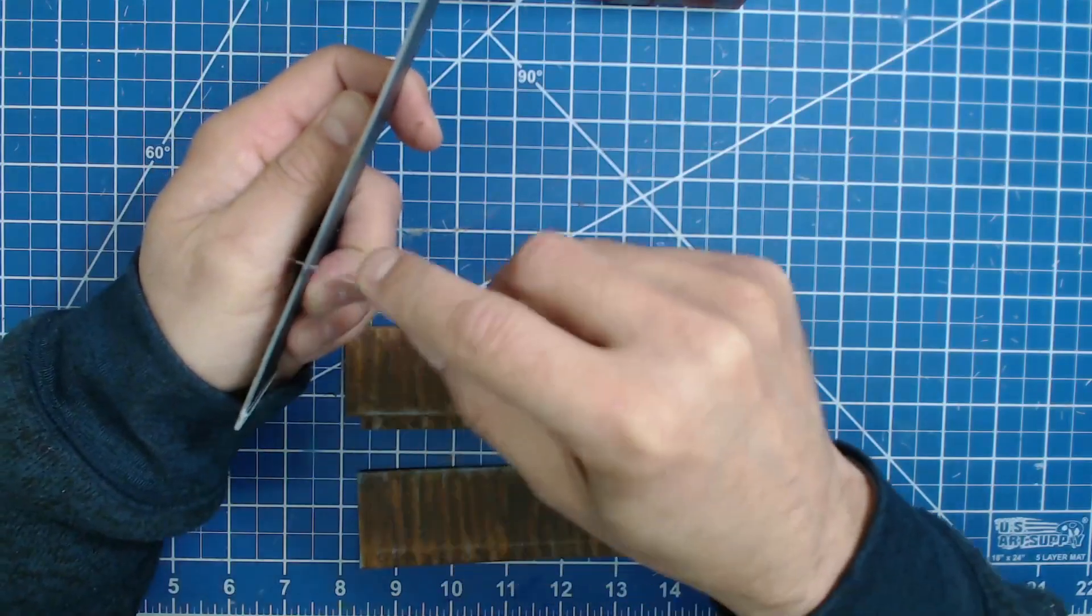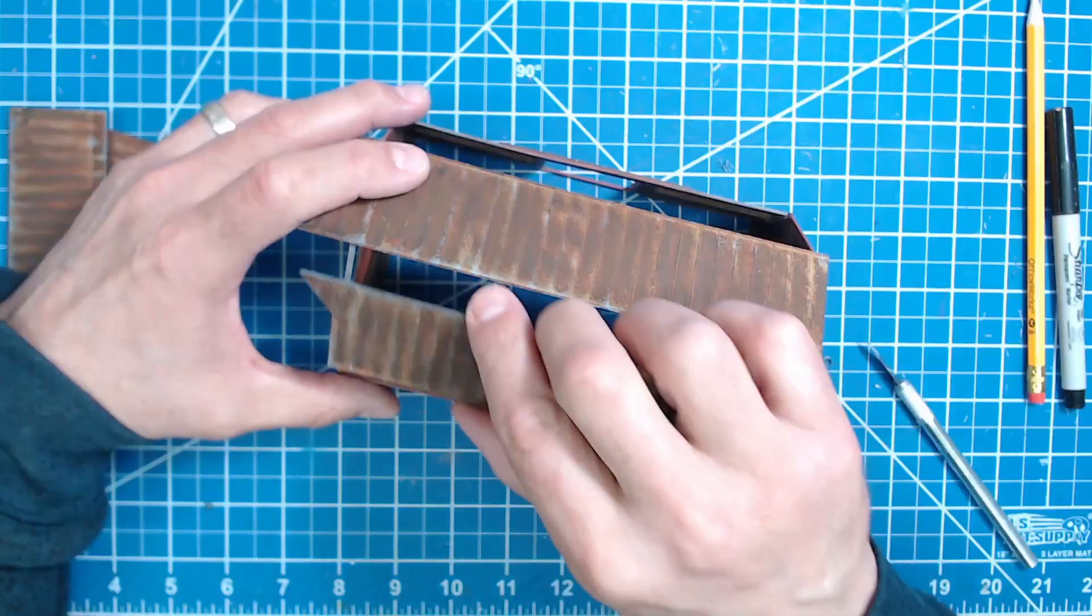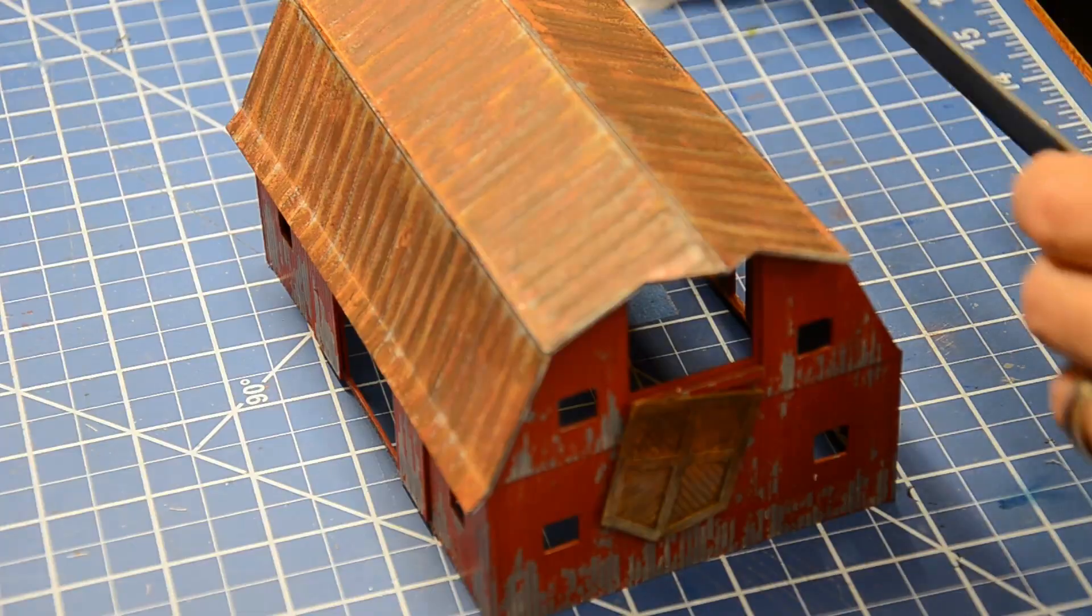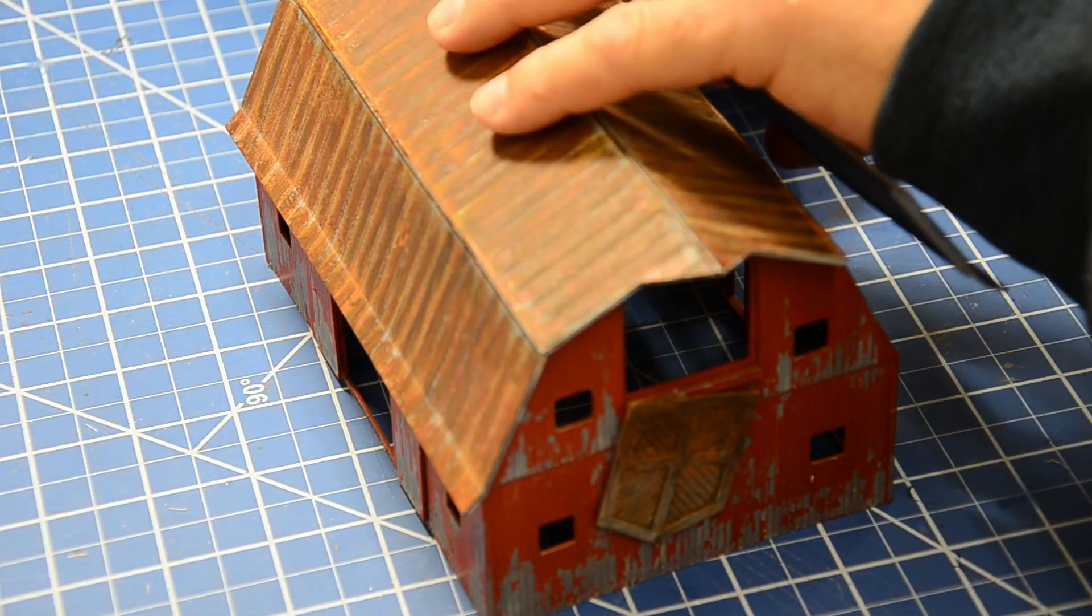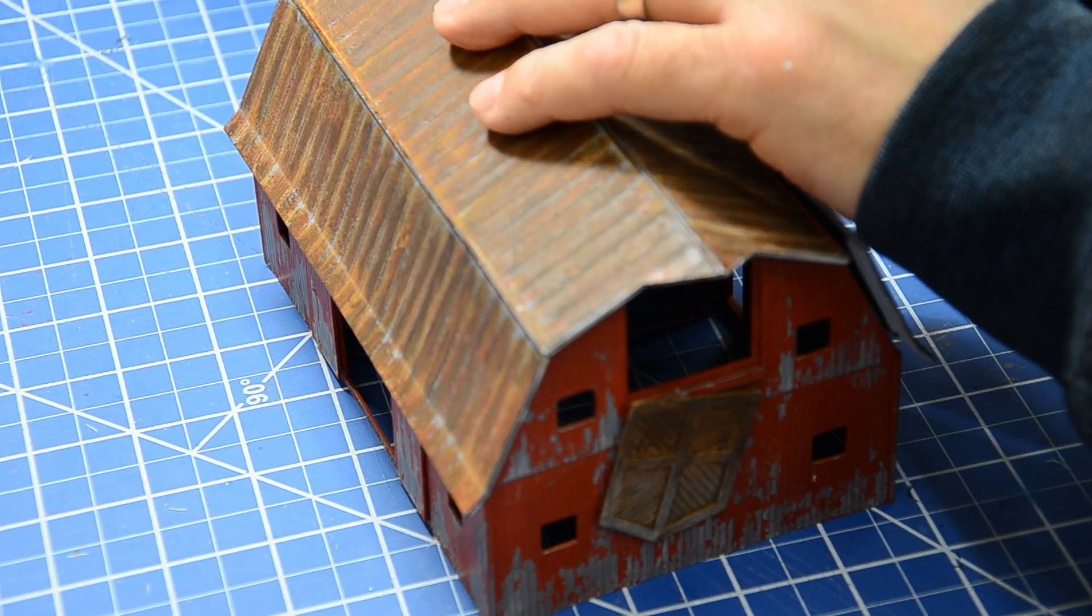Assembling the roof was next. First the gluing edges were scraped clean, then everything was glued together starting at the top. This was very fiddly and frustrating, particularly since I wanted to keep it removable for the time being.